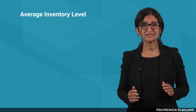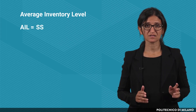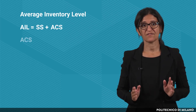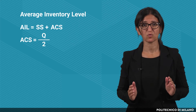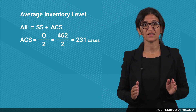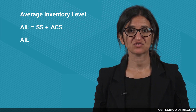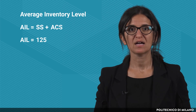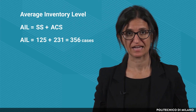Now let's calculate the average inventory level. It is the sum of the safety stocks and the average value of the cycle stocks. The average value of the cycle stocks is half the order quantity Q — 462 divided by 2 — so 231 cases. Therefore, the average inventory level is equal to 125 plus 231, resulting in 356 cases.